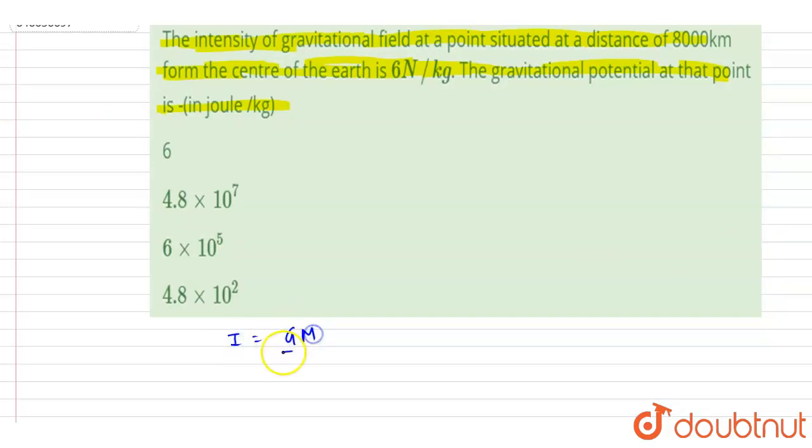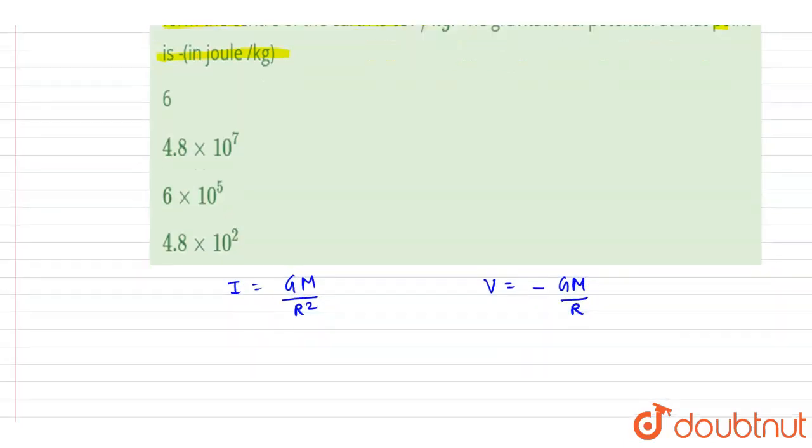And if I write down the potential at a point which is again at a distance of R only, it will be this. So you can see very clearly that this V is equals to I into R if I talk about the magnitude.